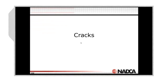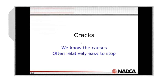Cracks. We know the cause, often relatively easy to stop. I was in a plant two weeks ago where intermittent cracks kept occurring and disappearing. When we checked, the casting was always cracked, but it was not on the surface — it was inside the casting, and it was a hot crack. We'll go through those.